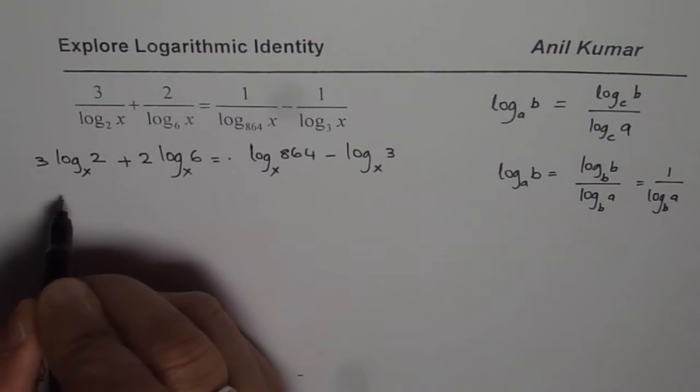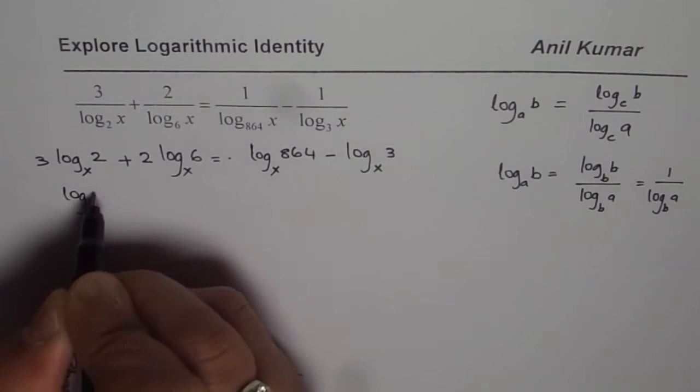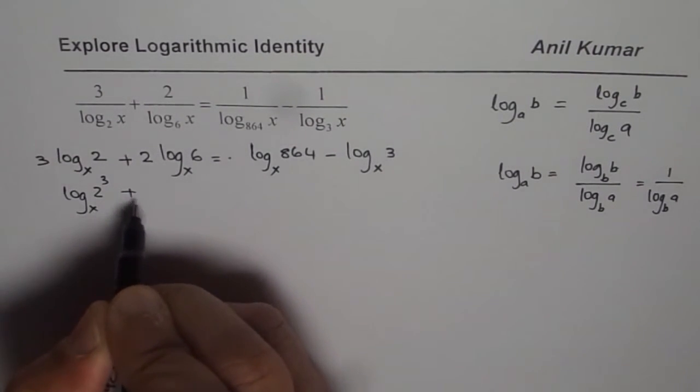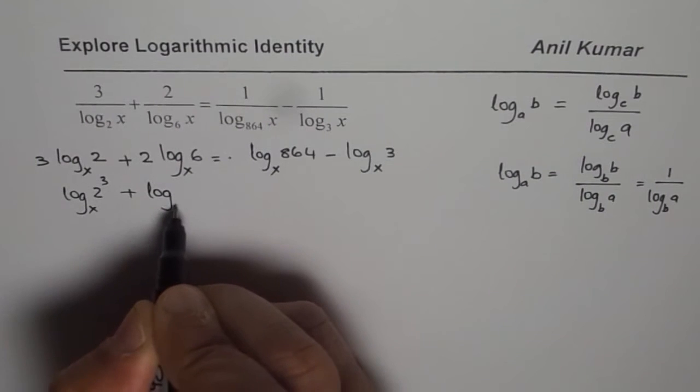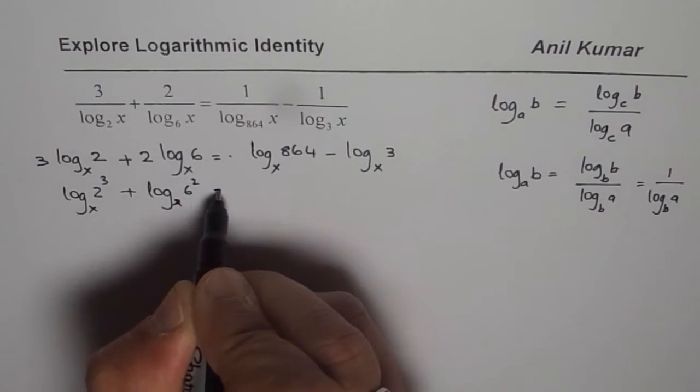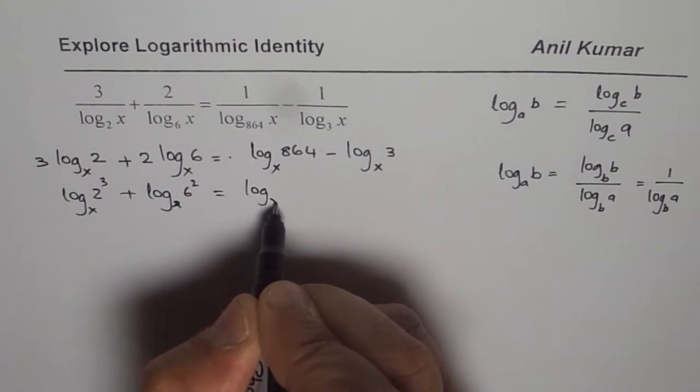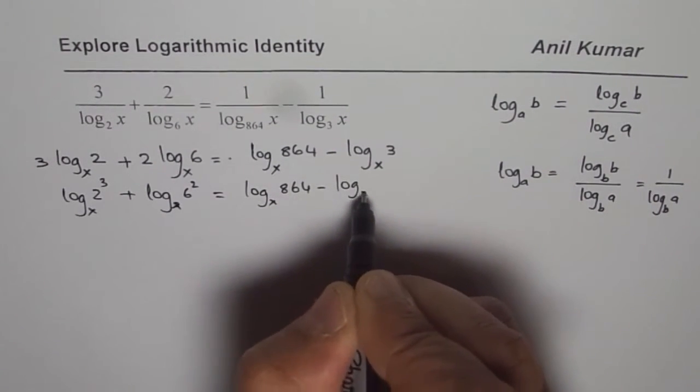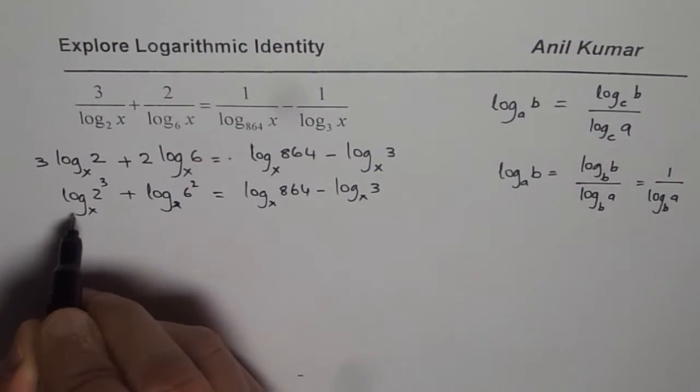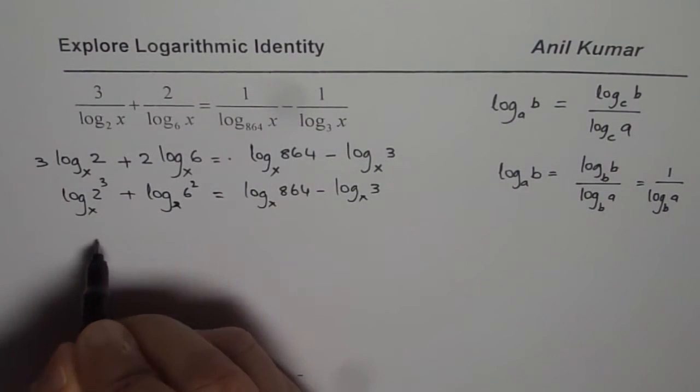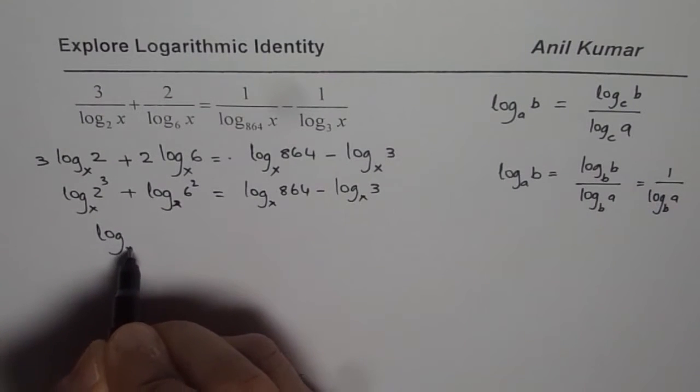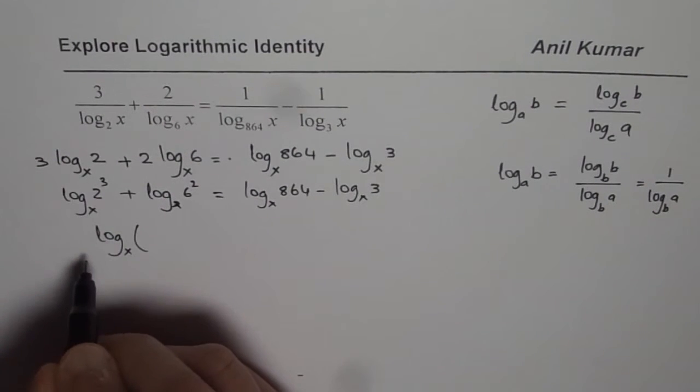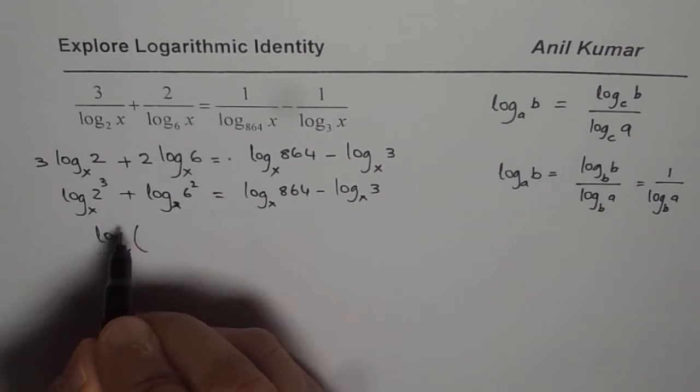So let's now first write this as power rule 2 cubed plus log to the base x of 6 square equals to log to the base x of 864 minus log to the base x of 3. Now applying the here product rule we get log to the base x of, so we have to multiply these terms.